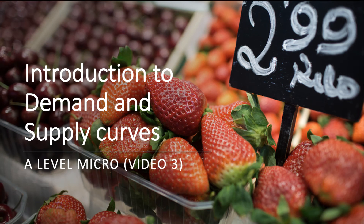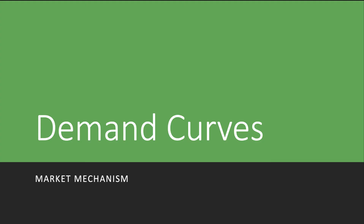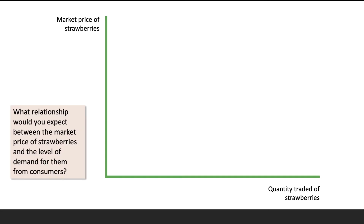Welcome to the third in our suite of videos looking at the market for strawberries, providing an introduction to the basic economics of supply and demand. In this third video we're going to look at demand curves and think about the nature of the demand curve for strawberries and how the curve might shift over time. We're working in an XY space with the market price of strawberries on the y-axis and the quantity traded of strawberries - in kilos traded per hour per day for example - on the x-axis.